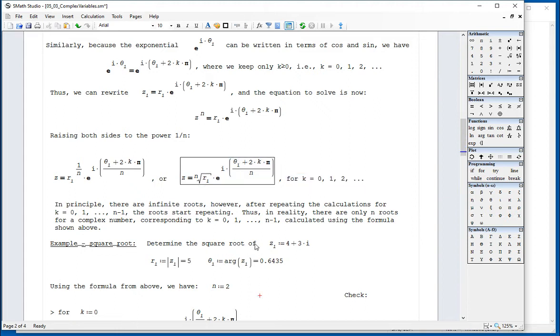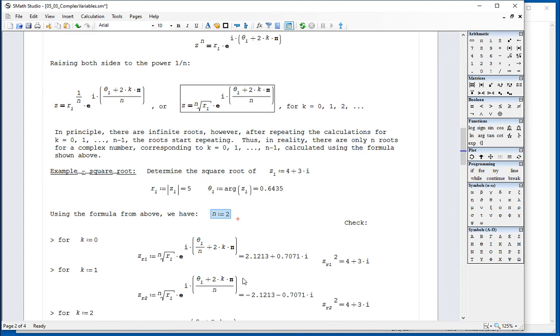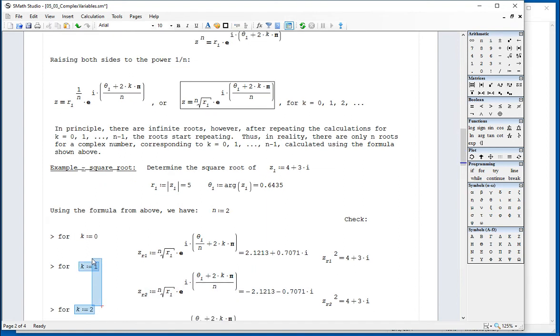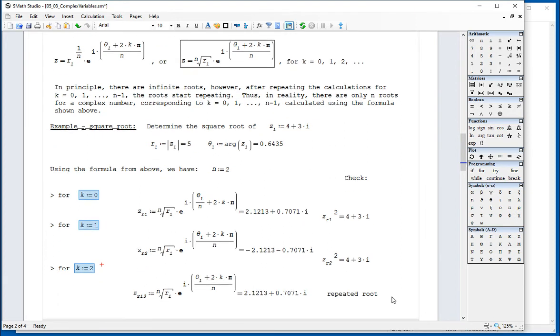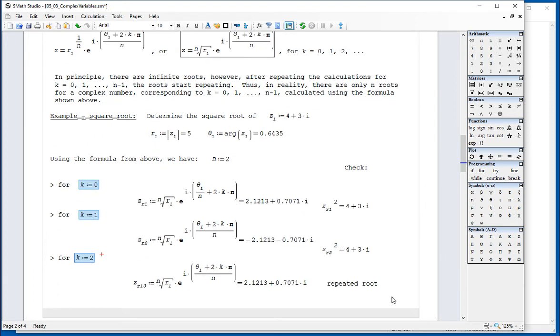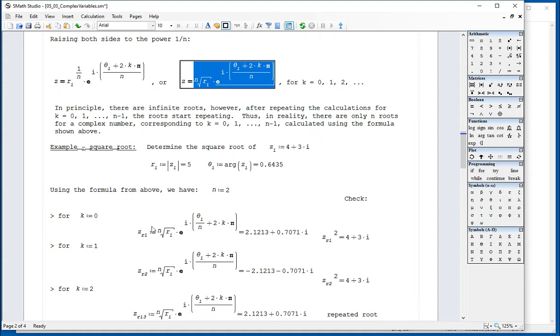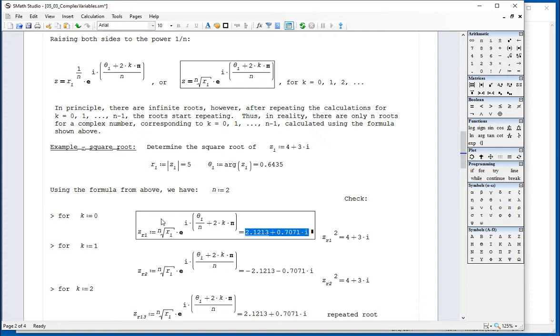For example, if you want to calculate the square root of z1 = 4+3i, the magnitude is equal to 5, the argument is 0.6435, and n is equal to 2. And so I need to do it only for k equal 0, 1, and 2, which is my n plus 1. And so I take the formula, this formula right here, and apply it to those values for k equals 0. I obtain this complex number that I'm calling zr1, that means for root. And my zr1 squared is equal to 4 plus 3i, which is the number that I'm working with.